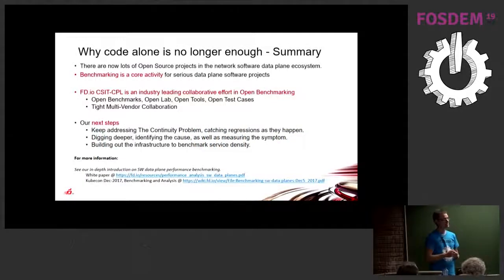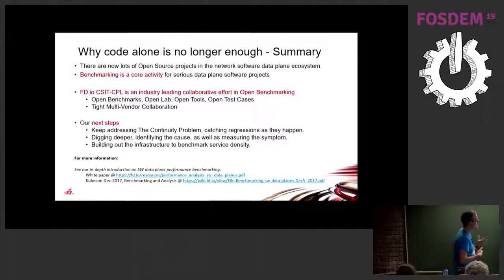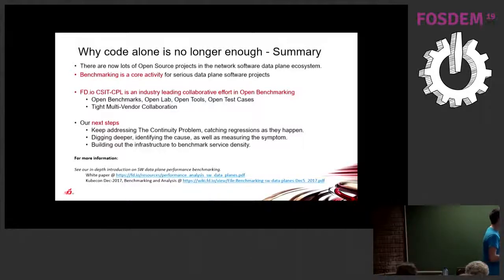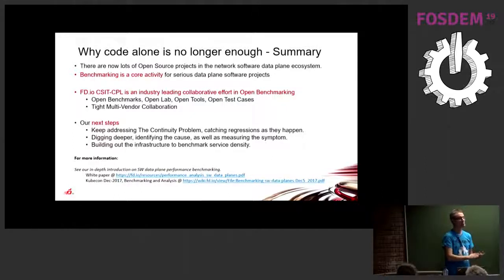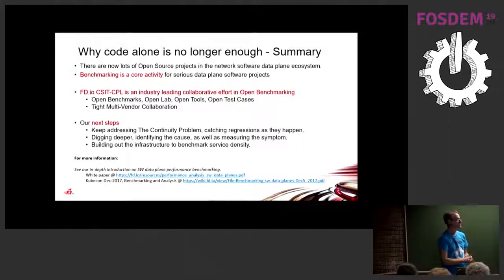Three problem statements we're working on: ensuring you don't lose performance as your data plane evolves; understanding where performance regressions are coming from at the next level of detail; and understanding how data planes perform in a cloud-native environment. That's the FD.io CSIT project — open and welcoming, same as every other open source project. There's always plenty to do, so we'd love to see you get involved.